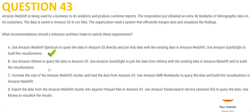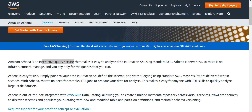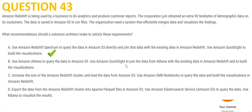Option B suggests Athena — Athena is an interactive query service for analyzing data in S3, and here it says use QuickSight to join data between Athena and Redshift. This could work, but it's not the most efficient way. I already have Redshift and Spectrum — using option B adds an extra service, Athena, which is unnecessary.